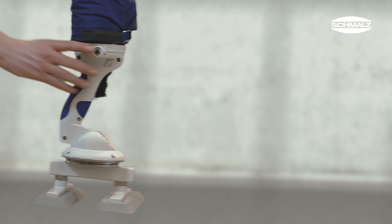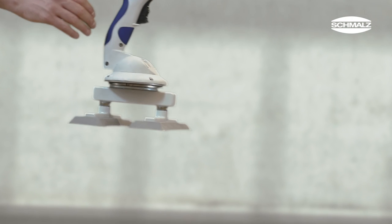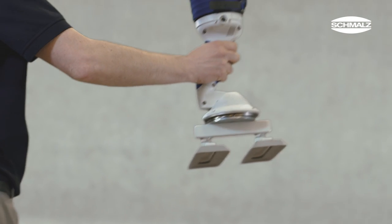The JumboFlex can optionally be equipped with a radio remote control. That way the operator can turn the vacuum generator on and off directly at the handle.